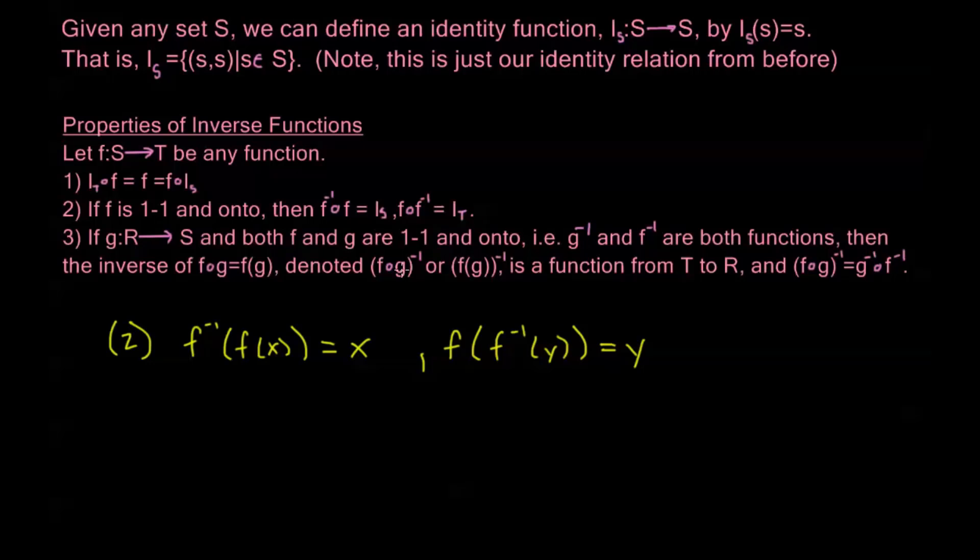Is denoted by taking the whole thing and putting that little negative one that we've been using to indicate inverse, and this is going to be a function from T to R, and we have this identity again from our relation. This is going to be the same. (F∘G)^(-1) is equal to G^(-1) composed with F^(-1).